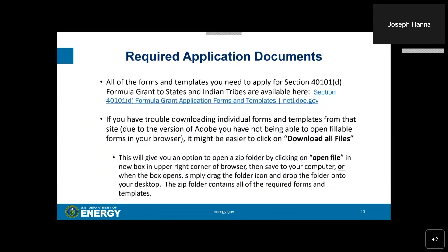All of the forms and templates you need to apply for the Section 40101-D Formula Grants to States and Indian Tribes are available at the link provided. If you have trouble downloading individual forms due to your version of Adobe not being able to open fillable forms in your browser, click on the option to download all files. This will give you a zip folder containing all of the required documents and templates, which you can save to your computer or drag to your desktop.